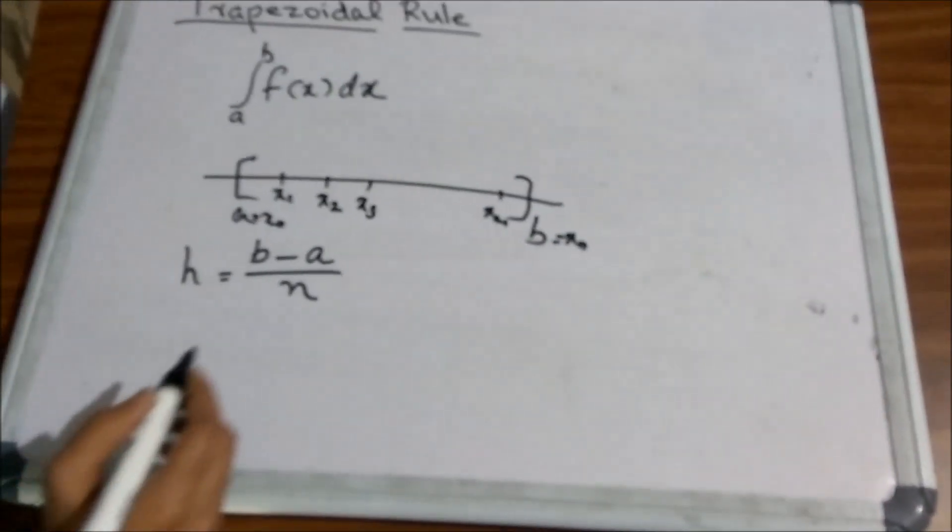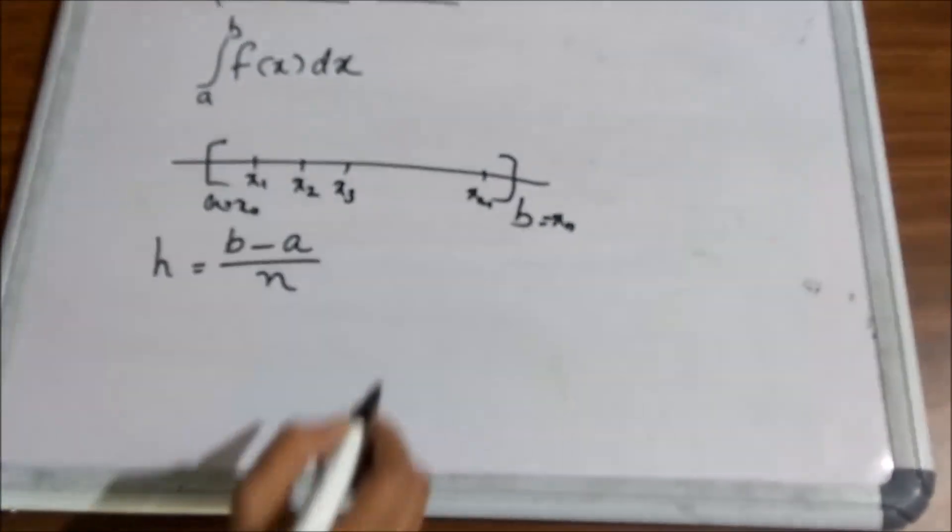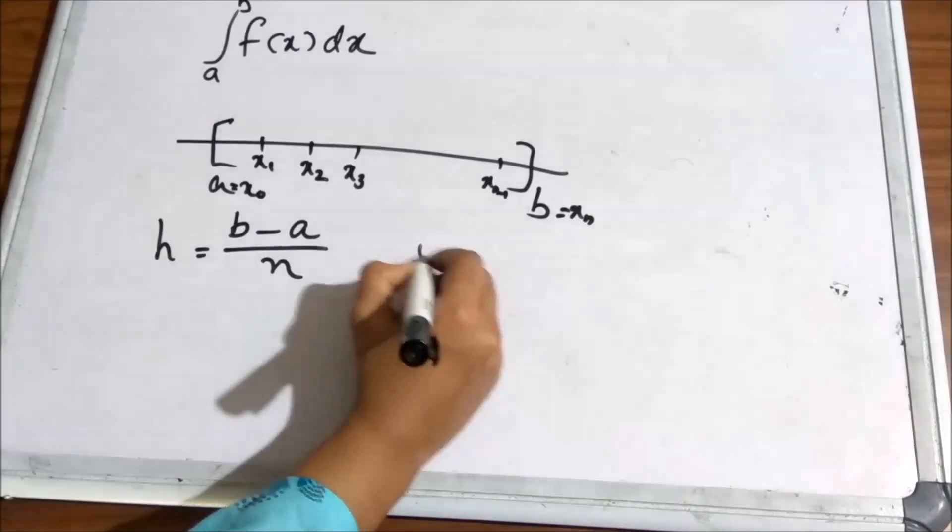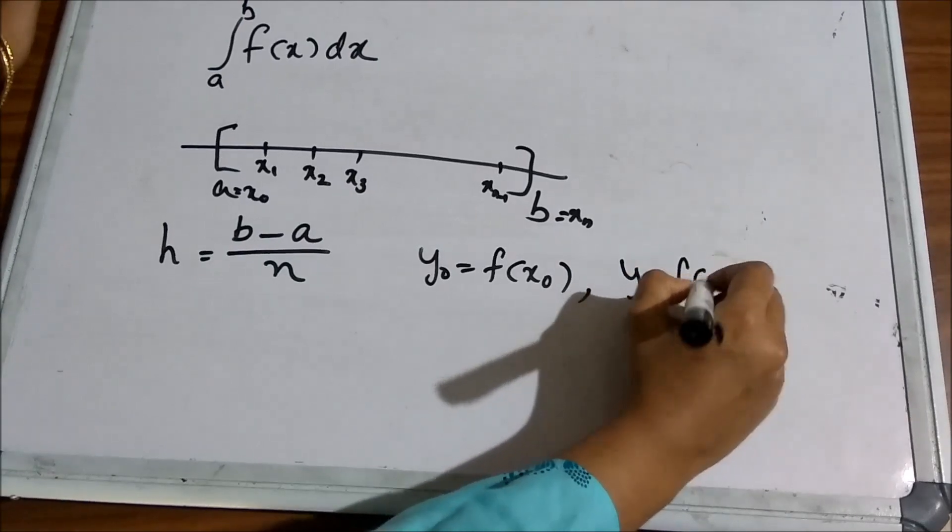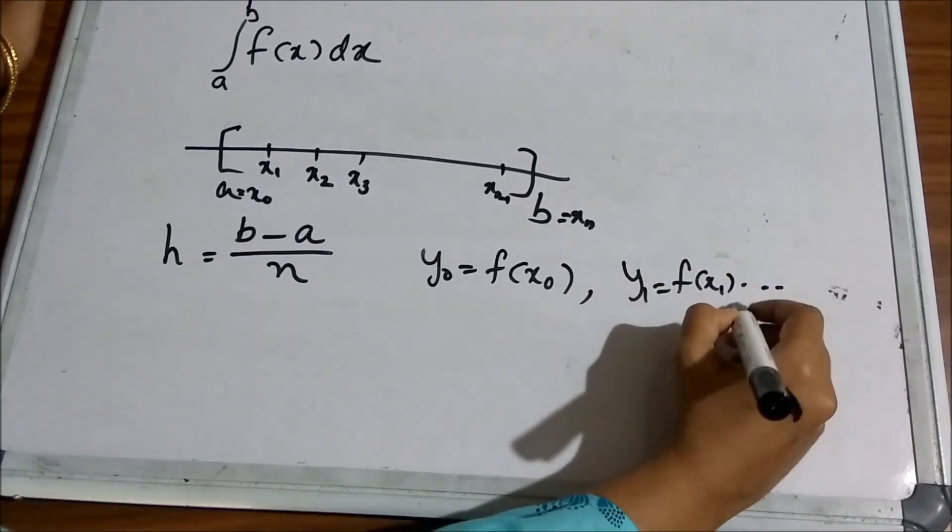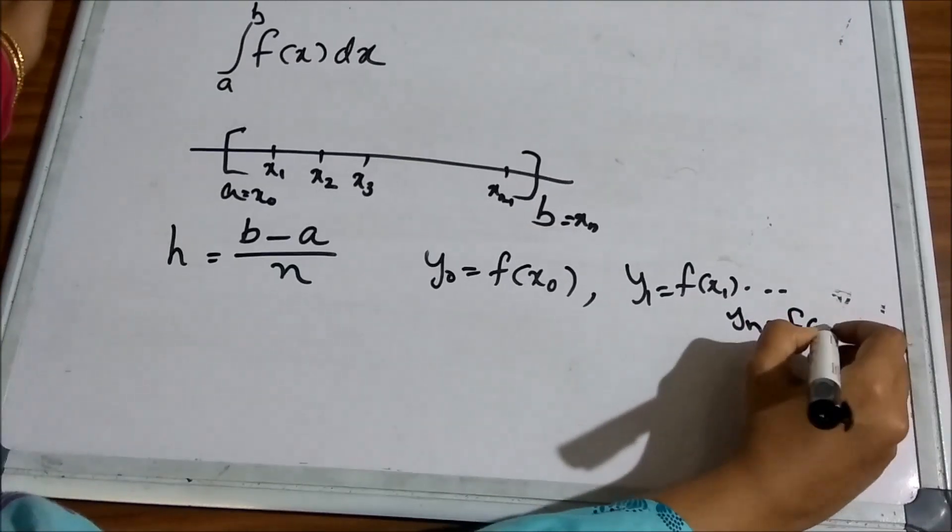Then, find the corresponding values of the function y as y0 is equal to f of x0, y1 is equal to f of x1, etc., yn is equal to f of xn.